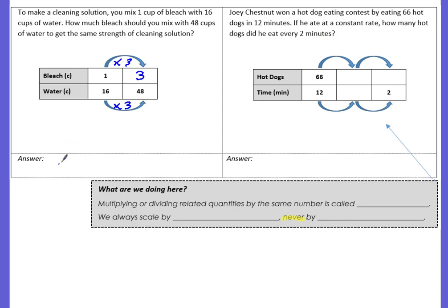So our answer would be just a simple statement because the question is how much bleach should you mix with 48 cups of water? The answer would be 3 cups bleach.